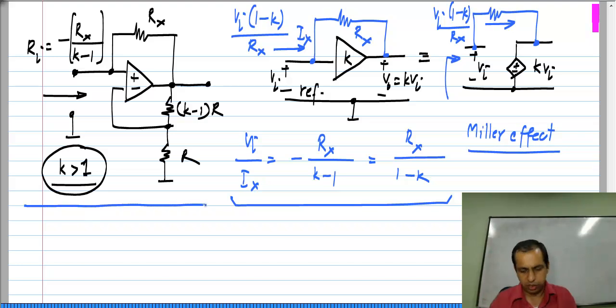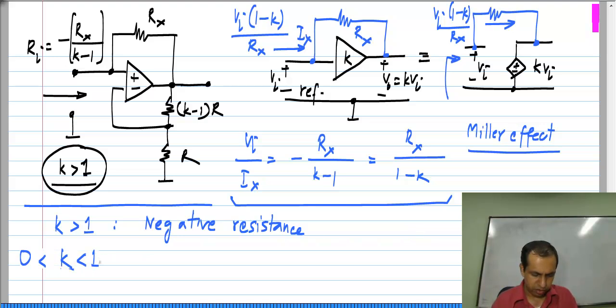Depending on the gain value, there are a few possibilities. If K is more than 1, we see a negative resistance at the input. And if K is between 0 and 1, we see a positive resistance which is more than R x, more than the resistor that you have in the circuit.